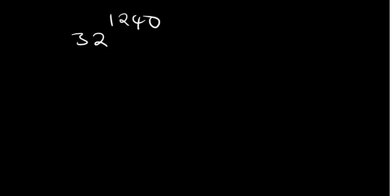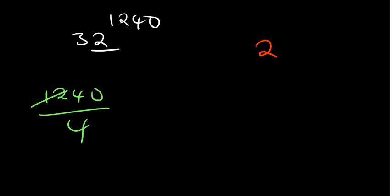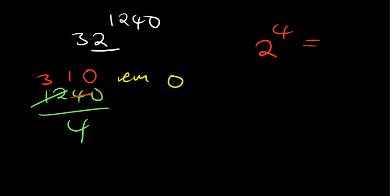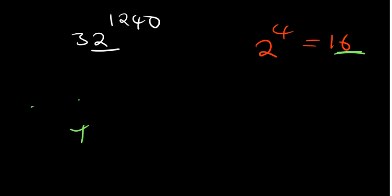Now let's look at 32 raised to the power 1240. The last digit of the base is 2. Divide 1240 by 4: 1240 ÷ 4 = 310 with no remainder. This is an exception — when the power is divisible by 4, treat the remainder as 4 instead of 0. So compute 2^4 = 16. The last digit is 6. Whenever your power is divisible by 4, use 4 as the remainder and raise the last digit of your base to that power.